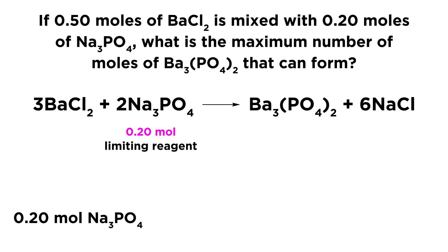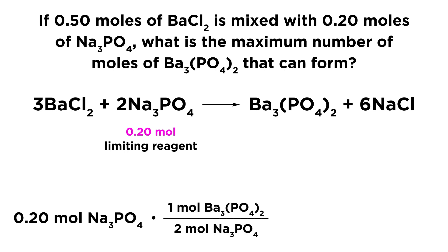We can go ahead and make our stoichiometric calculation using the amount of sodium phosphate, because that is what limits this reaction. Taking our 0.2 moles of sodium phosphate, we want to know the maximum number of moles of barium phosphate that can form. This is a two to one ratio — for every two moles of sodium phosphate, we get one mole of barium phosphate. So we multiply by one mole of barium phosphate over two moles of sodium phosphate, which means dividing by two, giving us 0.1 moles of barium phosphate as our answer.